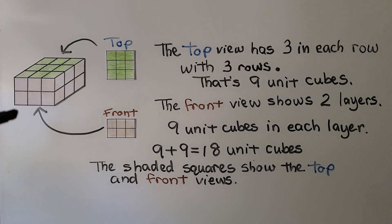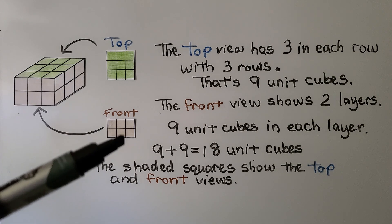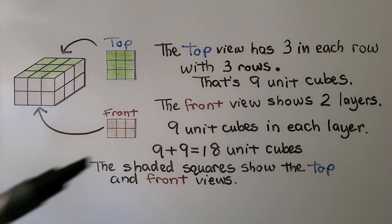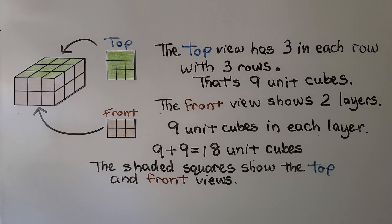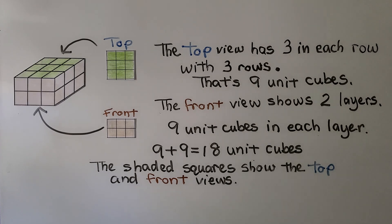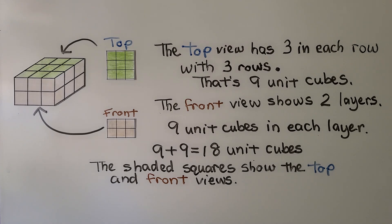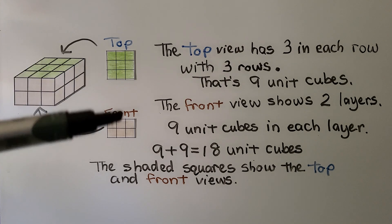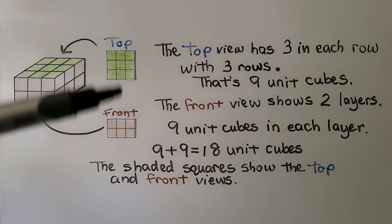The front view shows two layers. So this would be the front view — it's these six right here. We have nine unit cubes in two layers, and nine plus nine is equal to eighteen unit cubes. So we know this rectangular prism has eighteen unit cubes, and the shaded squares show the top and front views.